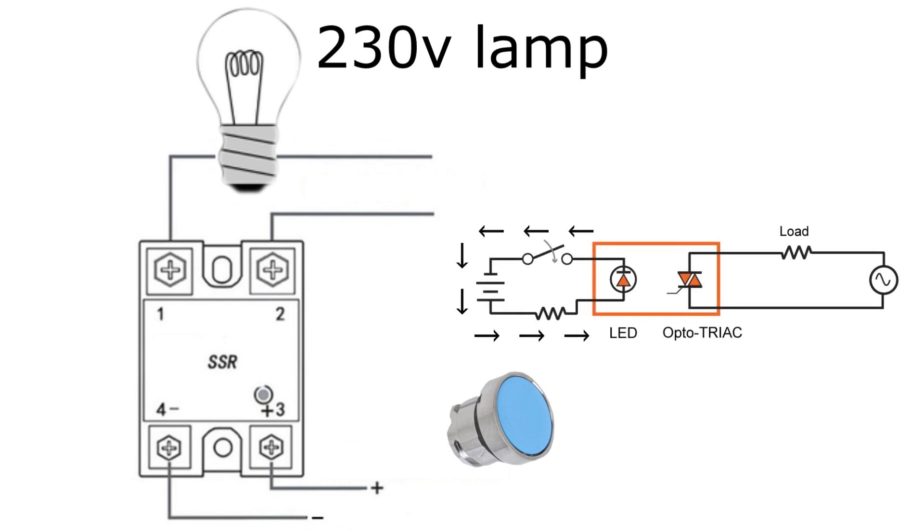It works so that once we let our current through to the input, there will be an LED diode that will make an opto triac let the current through to the output.